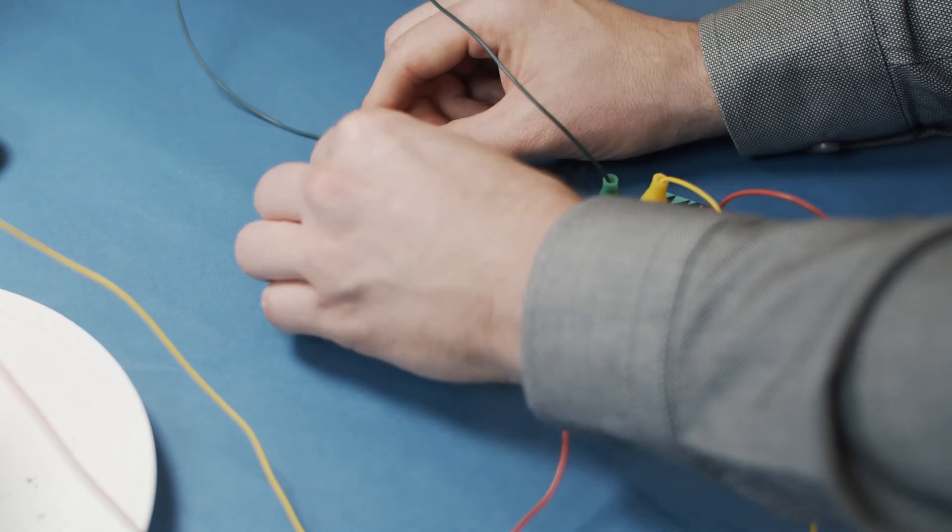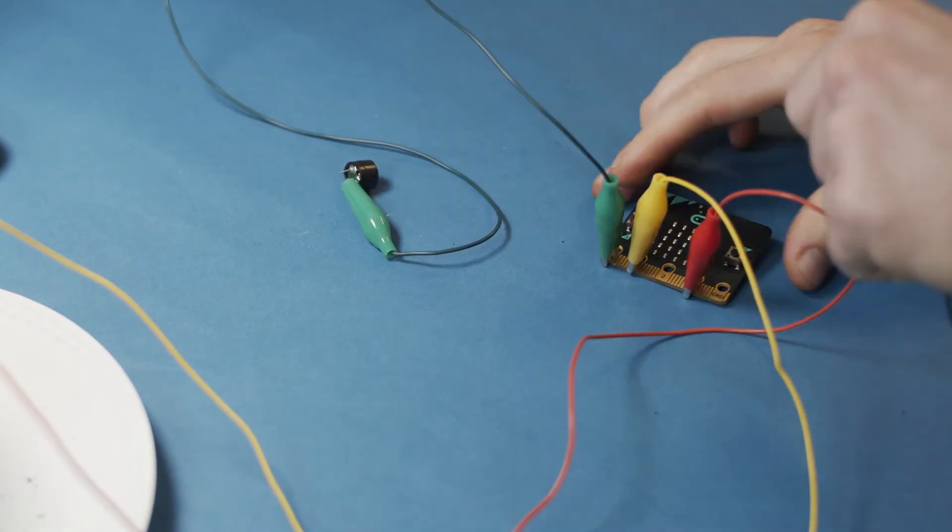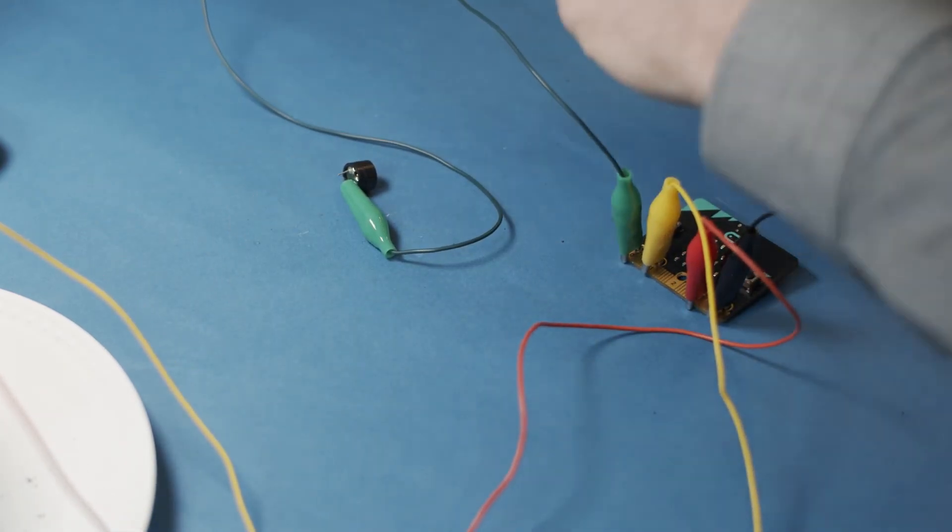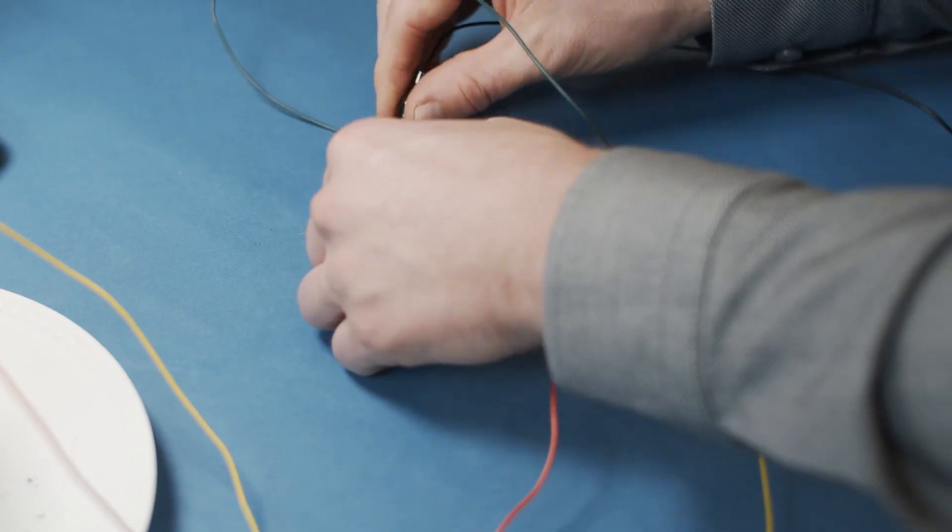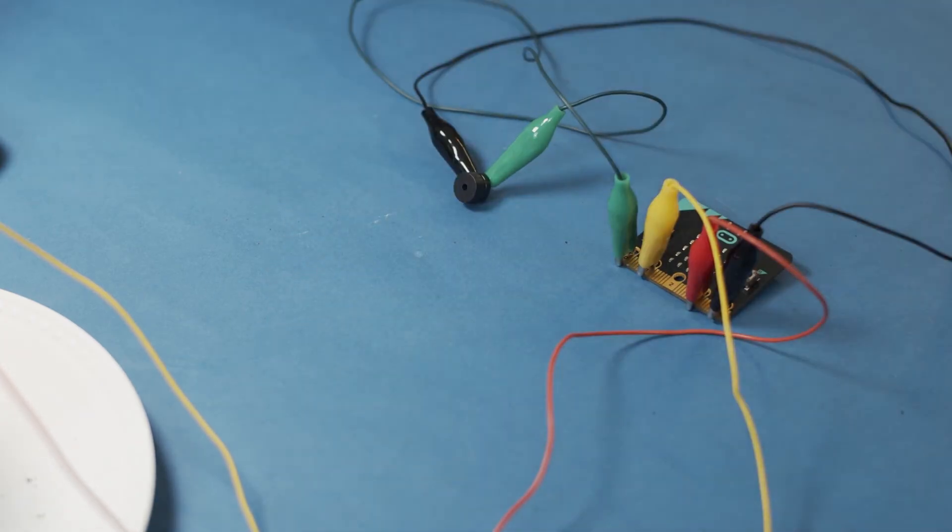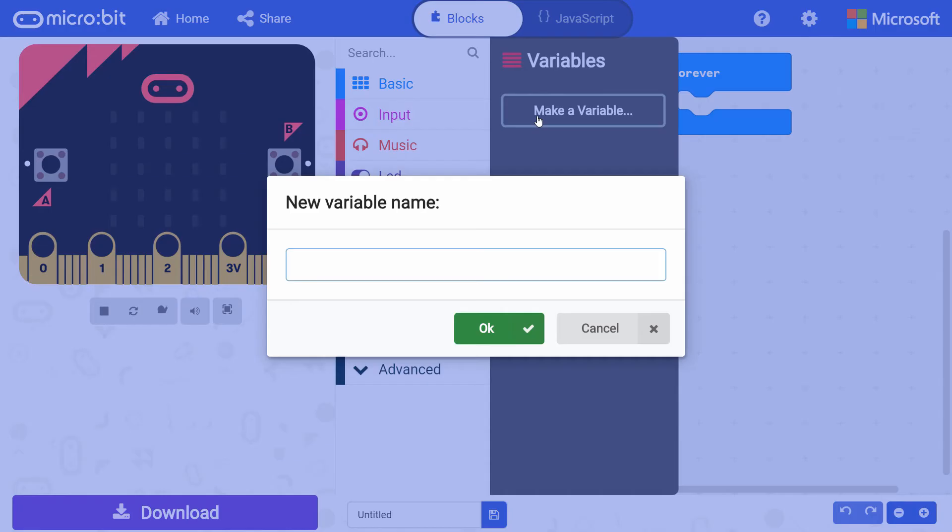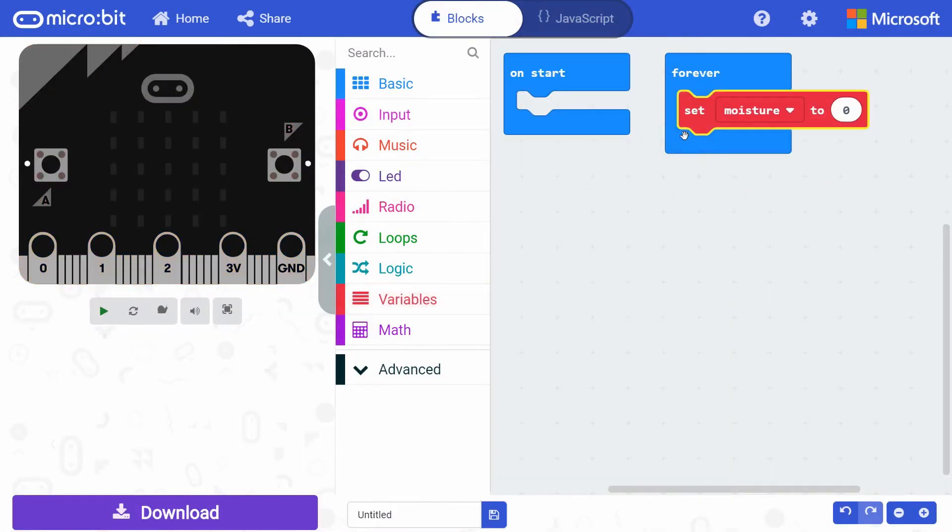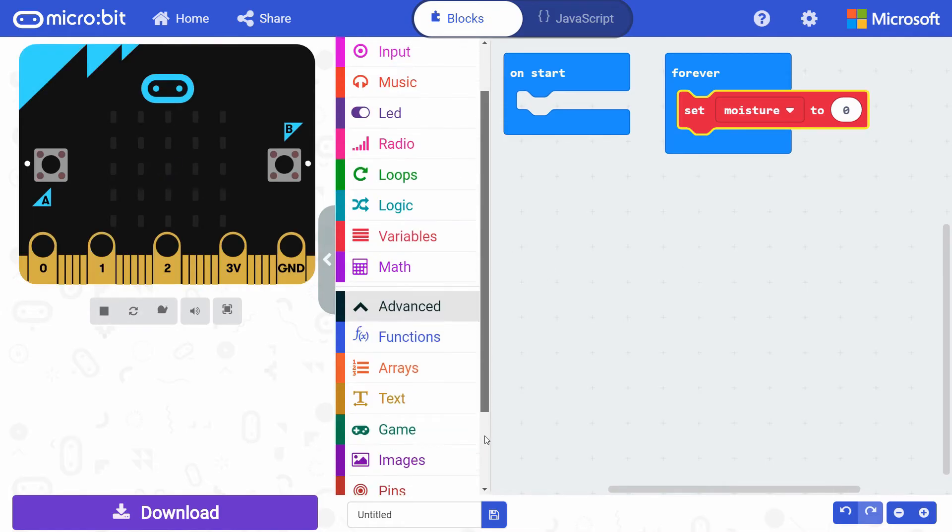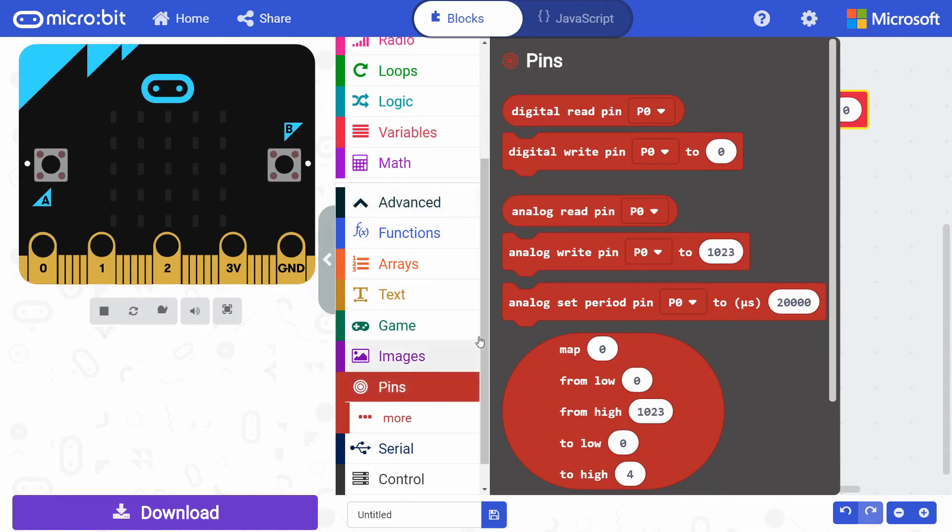If you'd like to make a soil moisture alarm, connect a small speaker up to pin zero and ground while leaving the nails connected to pins one and three volts. In a new MakeCode project, create a new variable named moisture. Drag a set moisture block under forever, and go into the advanced section. In pins, get an analog read pin block and snap it to the right side of the set moisture block.